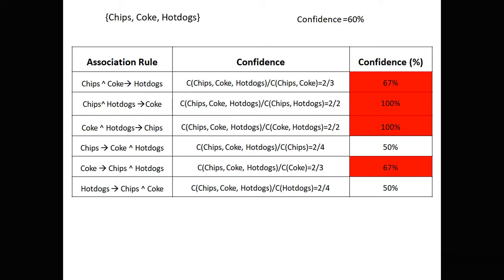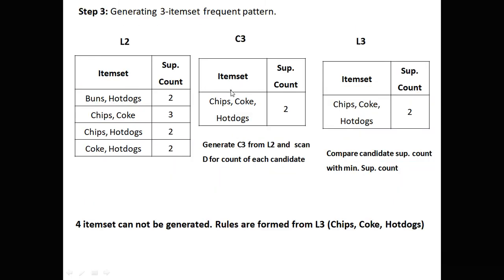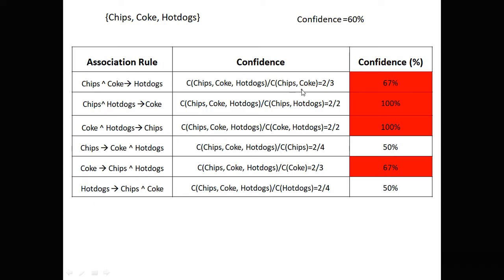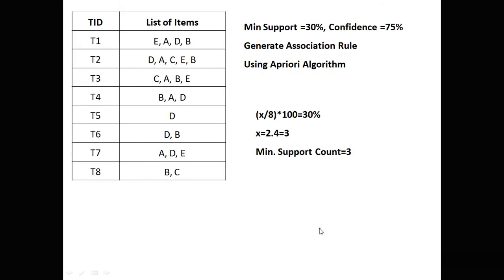After writing all combinations, we apply the confidence formula. Confidence equals the support count of the full itemset divided by the count of the left-hand side. The numerator is always the count of chips, coke, and hotdog taken from L3, which is 2. The denominator is the count of the left-hand side from the table — for example, chips and coke appears 3 times, chips and hotdog 2 times, and so on. Rules with confidence greater than or equal to 60% are qualified. The first, second, third, and fourth rules get qualified for association rule mining.